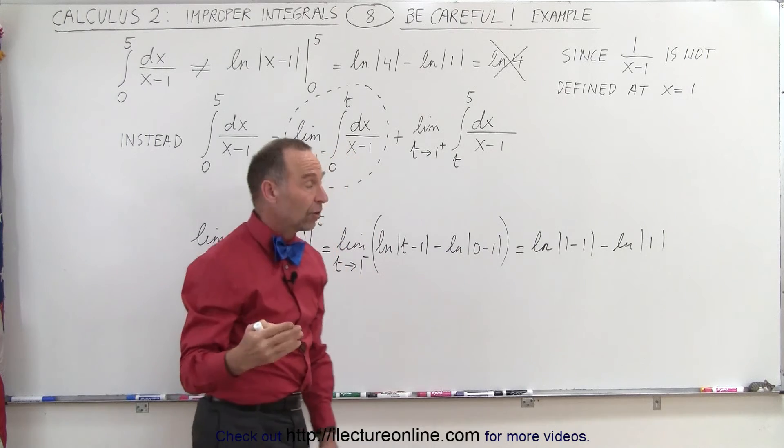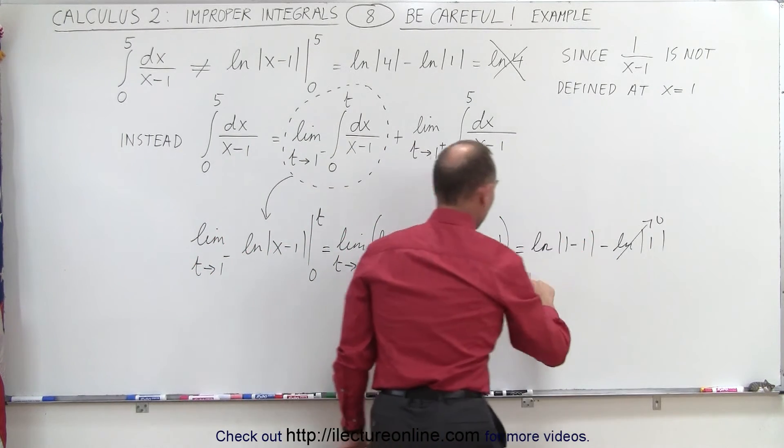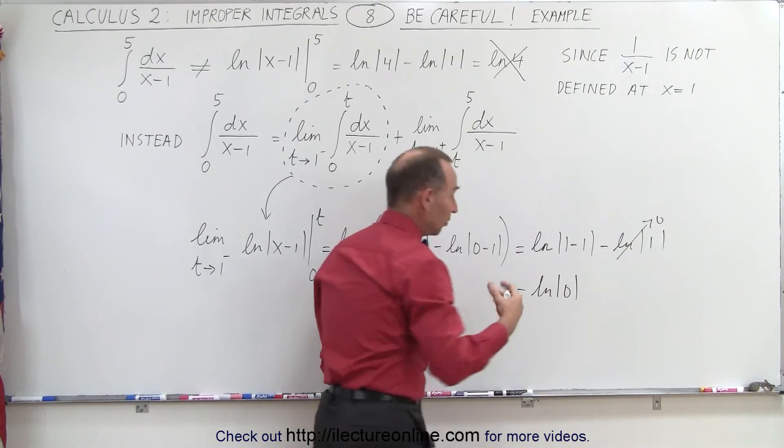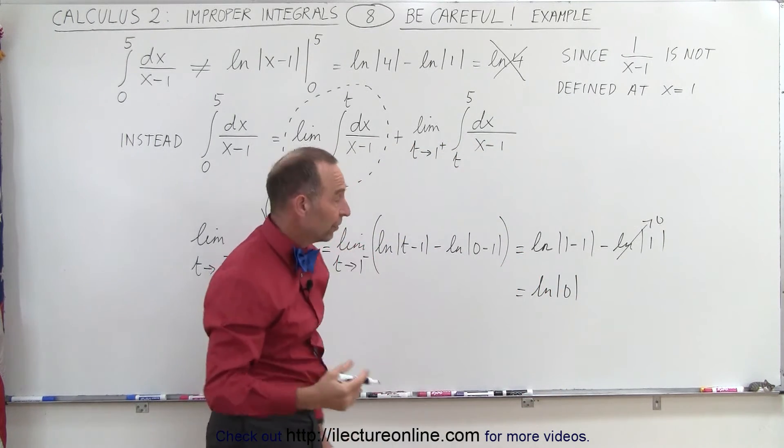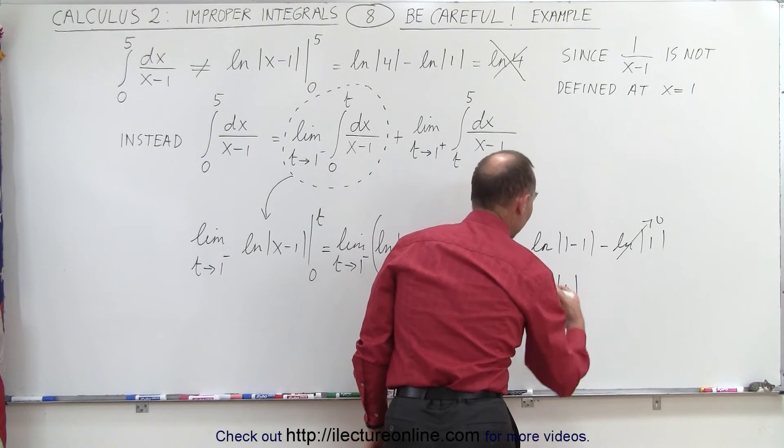And of course the natural log of 1 is equal to 0, so this term goes to 0. But over here this term becomes equal to the natural log of 0. And the natural log of 0 is not defined, that is infinite. So therefore this is the same as saying infinity, it's not defined.